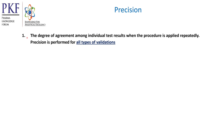Precision is the degree of agreement among individual test results when the procedure is applied repeatedly. Precision is performed for all types of validations to know about different categories — category 1, category 2, category 3, and category 4 — and their corresponding validation. Please watch my previous lectures on validation parameters of session 3.